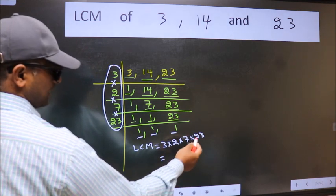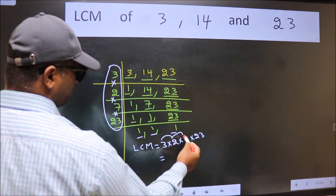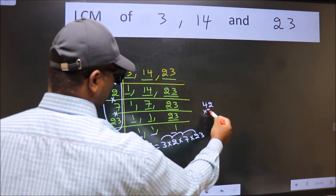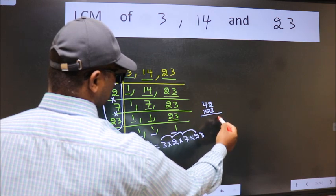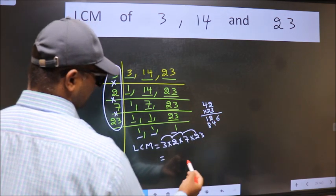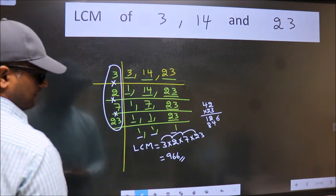Let us multiply these numbers: 3 into 2 is 6, into 7 is 42, into 23. 3 twos 6, 3 fours 12, 2 twos 4, 2 fours 8. So we get 966 is our LCM.